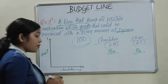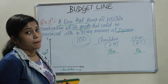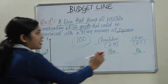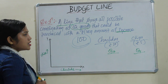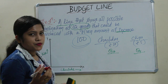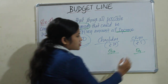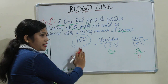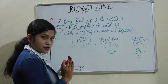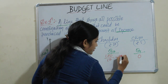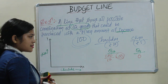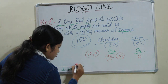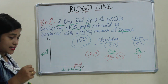Our budget is 100 rupees — within 100 rupees, we have to purchase these two products. Let's say we will not purchase any chips; chips quantity is 0. So if we are not purchasing chips, all our money can be diverted to chocolate. That means 100 divided by 10 equals 10 chocolates. So the first combination is 10 chocolates and 0 chips.